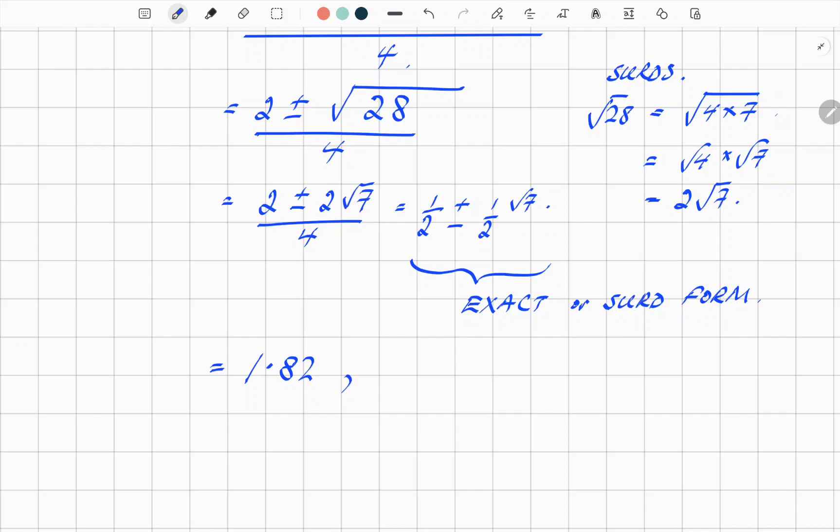And I'm going to just verify that with my calculator. So let's see what we get for that. 0.5 minus 0.5 times root 7, and that is minus 0.82, and those answers, both of them, are to two decimal places.